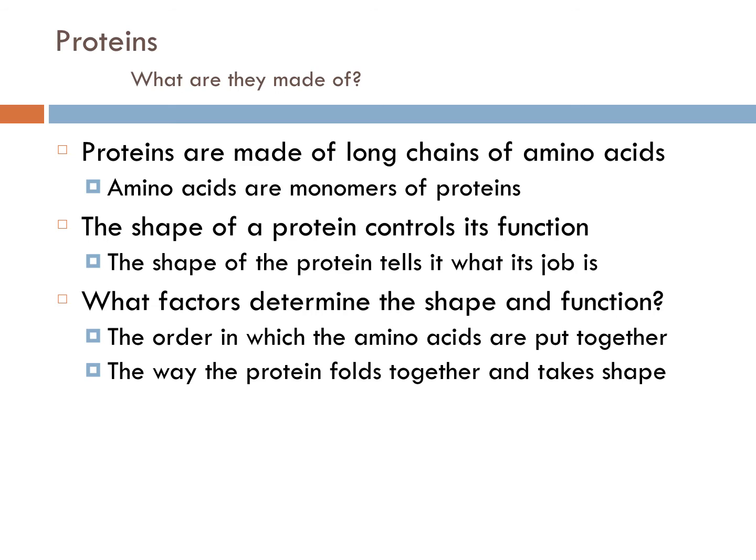Proteins are made of long chains of amino acids, so the monomers of proteins are the amino acids. The amino acids get put together in long chains to form the polymers, which become the proteins. The shape of the protein controls its function. Proteins are kind of like puzzle pieces — if they don't fit into the correct spot in a cell, they're not going to function properly. So the shape of the protein tells it what its job is.